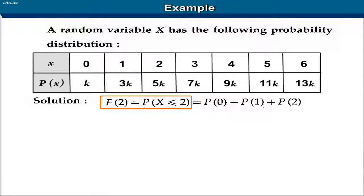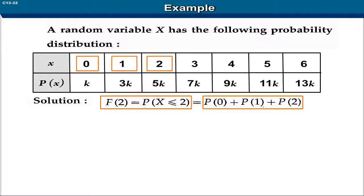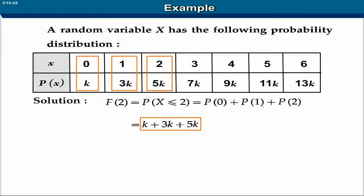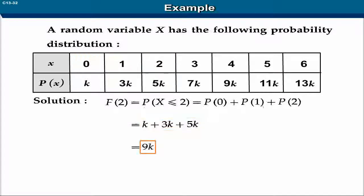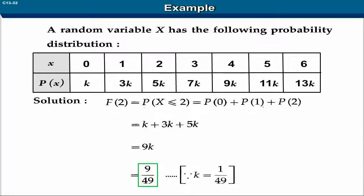F(2) is equal to P(X ≤ 2) is equal to P(0) plus P(1) plus P(2), which is equal to k plus 3k plus 5k. The sum is 9k, which is equal to 9 upon 49.